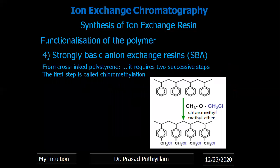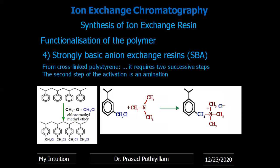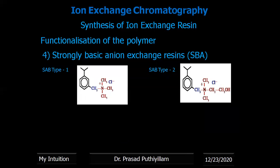For strongly basic anion exchange resins (SBA) from cross-linked polystyrene, two steps are also required. First, chloromethylation to prepare chloromethylated polystyrene. Then in the second step, amination: the chloromethylated polystyrene reacted with trimethylamine gives SBA Type 1, while reaction with dimethyl ethanol amine gives SBA Type 2. Both Type 1 and Type 2 strongly basic anion exchange resins are produced by this route.